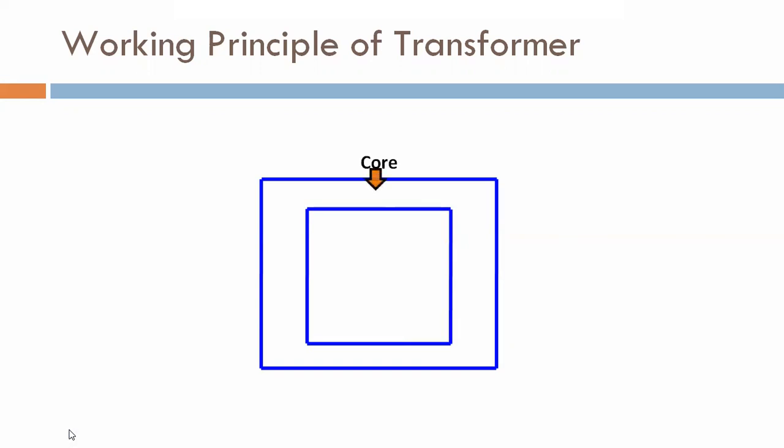Now, the working principle of transformer: a transformer is a static device which transforms the voltage from one level to another level and transfers the power from one circuit to another circuit at the same frequency.